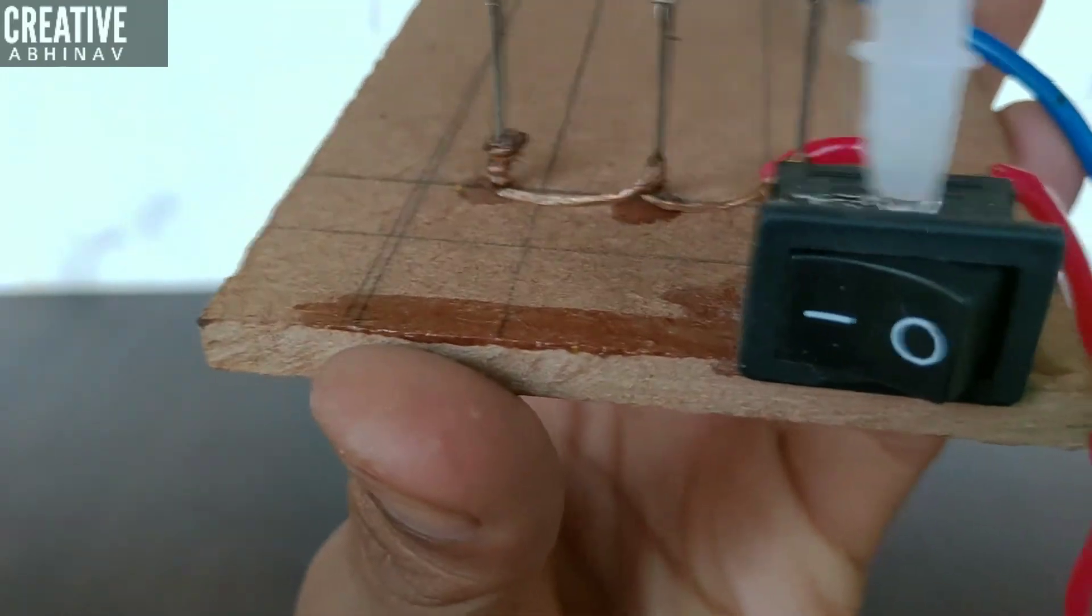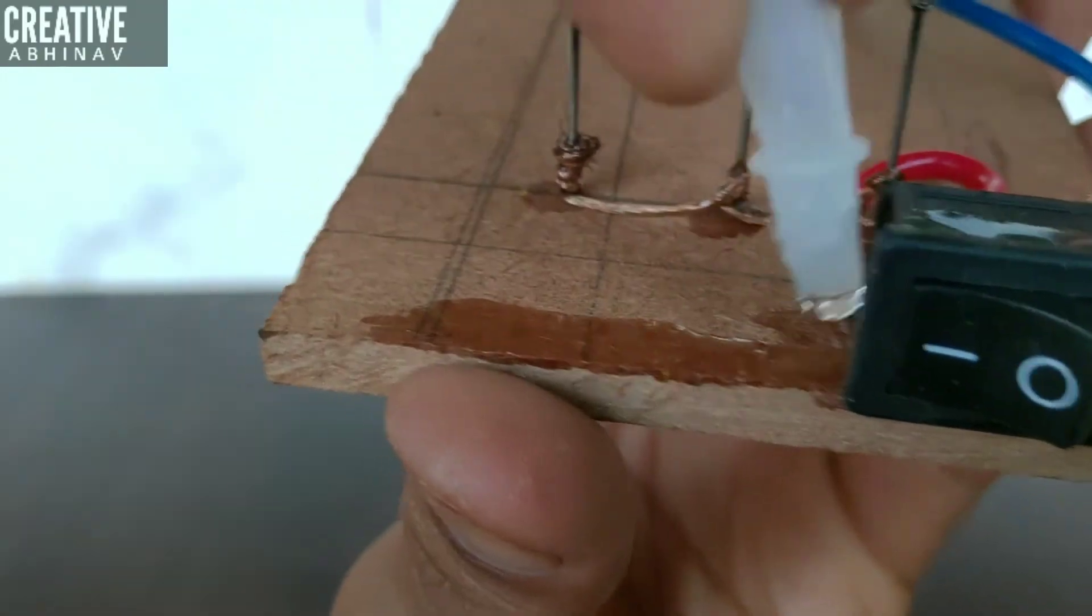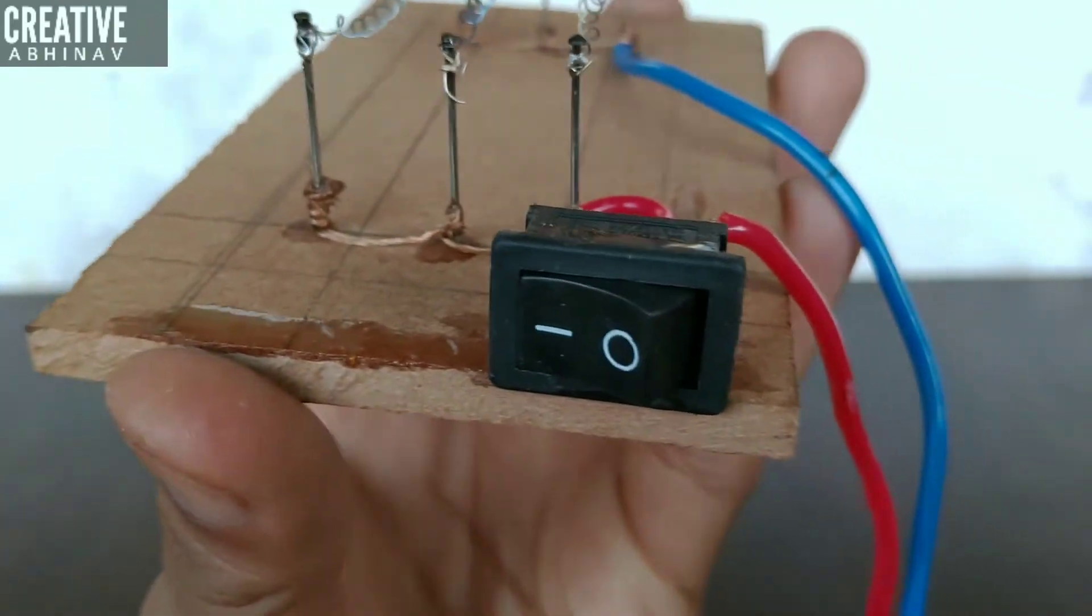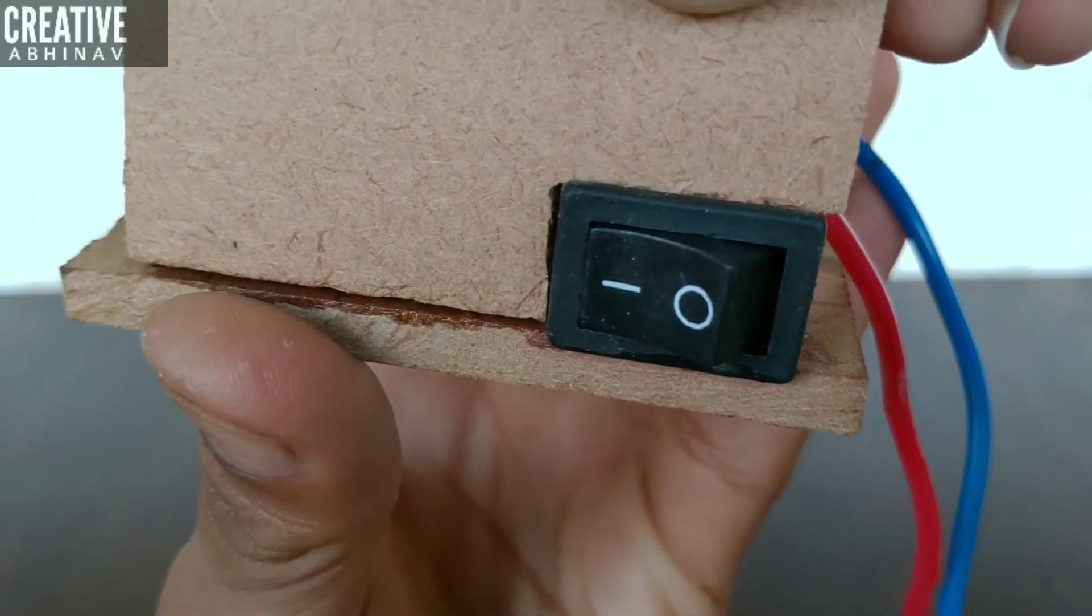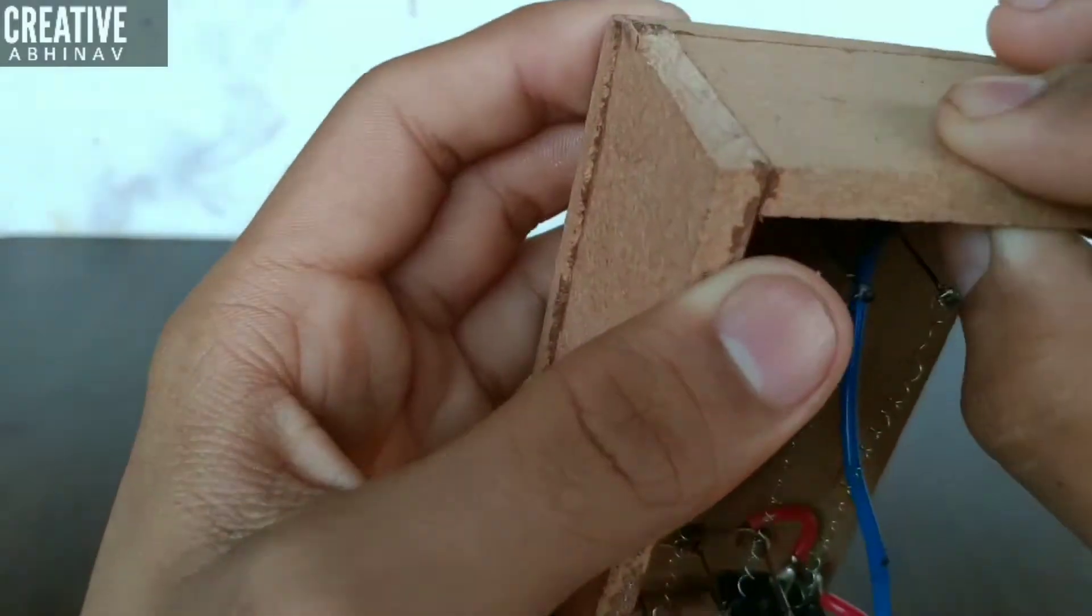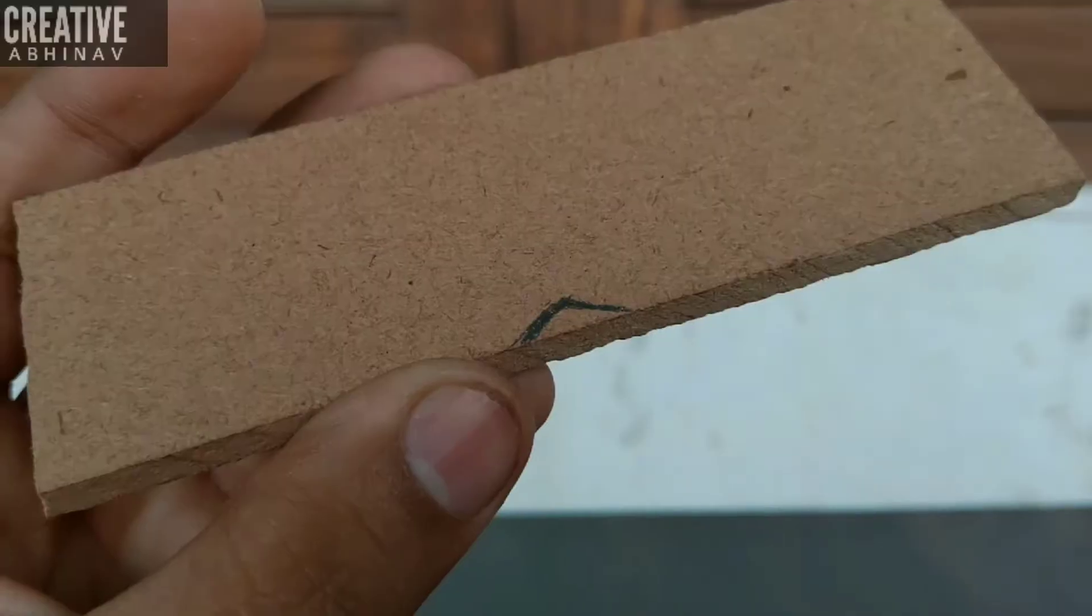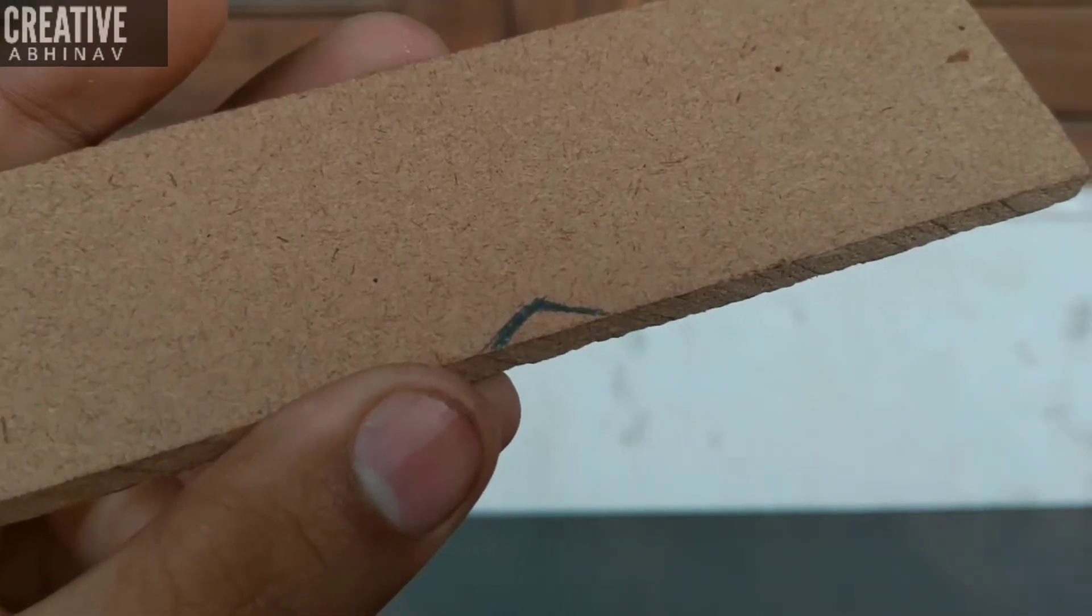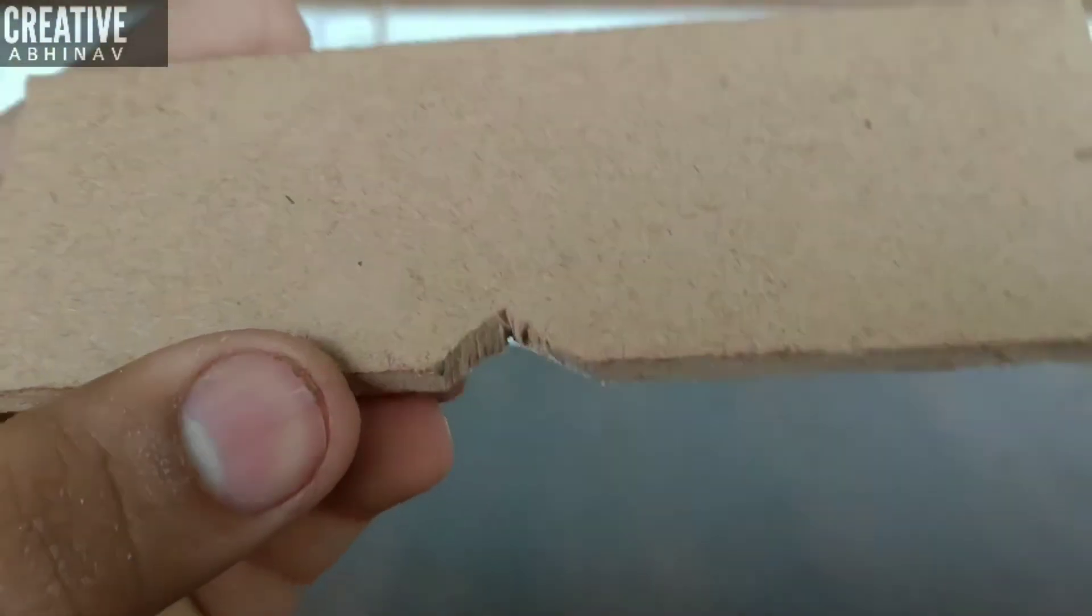Then guys, put some fabric on the side of heater board, then slightly paste that wooden piece. Then guys, we have to paste other side parts with the help of fabric. Then let's cut a small triangle from wooden piece for wire exit.